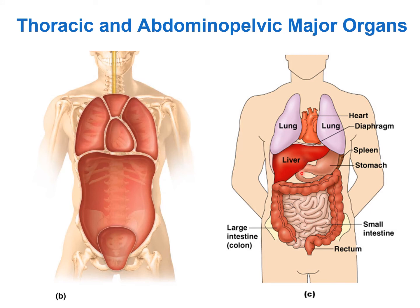The liver, stomach, small intestine, and most of the large intestine are found in the abdominal cavity. The pelvic cavity contains the sigmoid colon, the rectum, the reproductive organs, and the urinary bladder. For now, as long as you can differentiate which organs are in the abdominal pelvic cavity versus the thoracic cavity — and know that the lungs are in the pleural cavities and the heart in the mediastinum — that's sufficient.